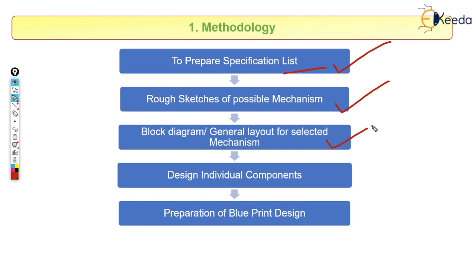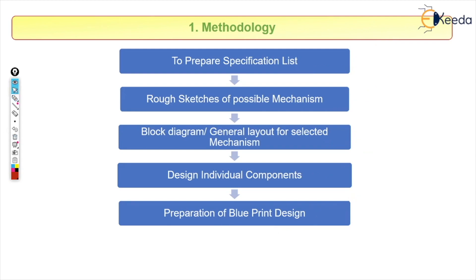After gathering all requirements, we are going to design individual components. For example, once the weight is determined, we calculate what motor capacity is needed to lift it and what the counterweight should be — each component designed individually under specific conditions. The final step is the preparation of the blueprint design, which is the last step of methodology where our product or design is ready for manufacturing, completely done with analysis and design, and ready to proceed to production.